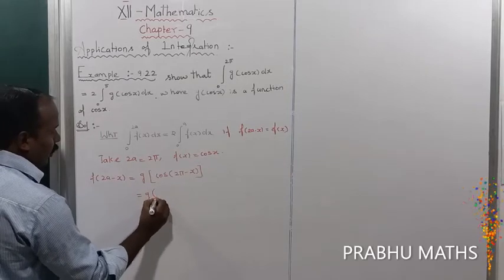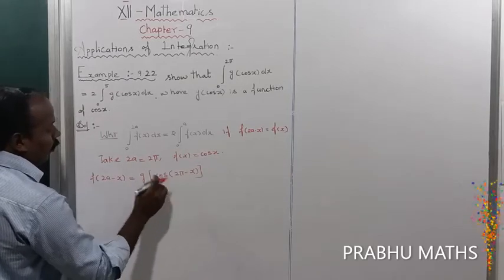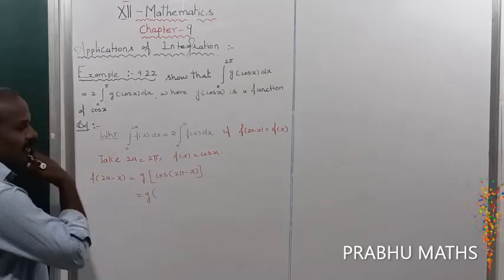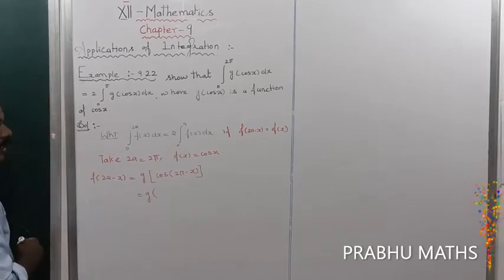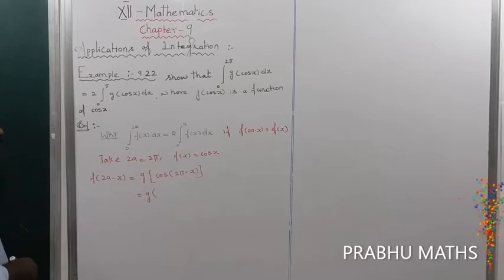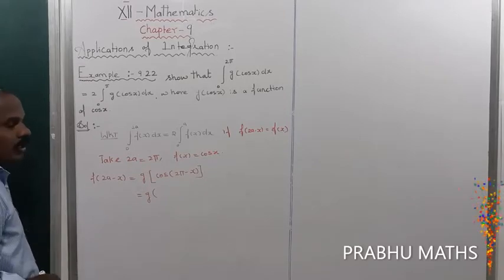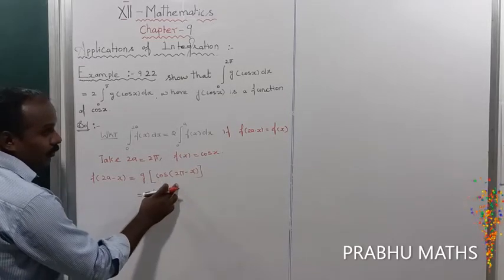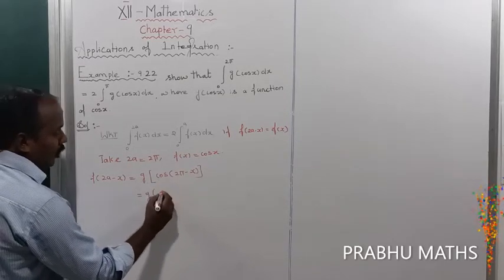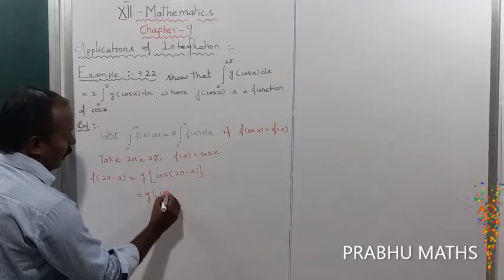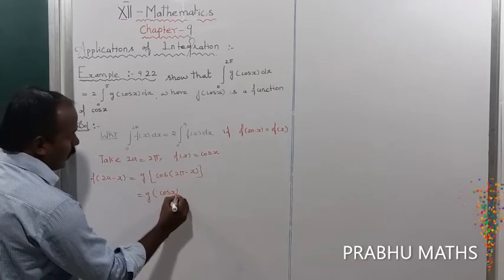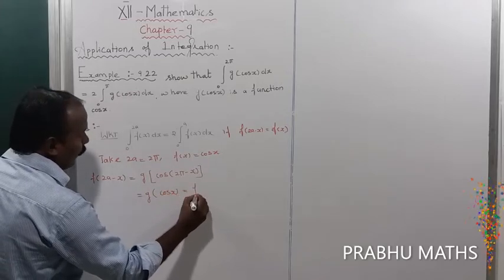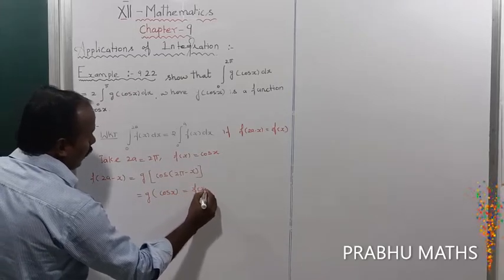Now cos(2π - x) corresponds to the 4th quadrant, where cosine is positive. So cos(2π - x) = cos x. Therefore f(2a - x) = g(cos x) = f(x).